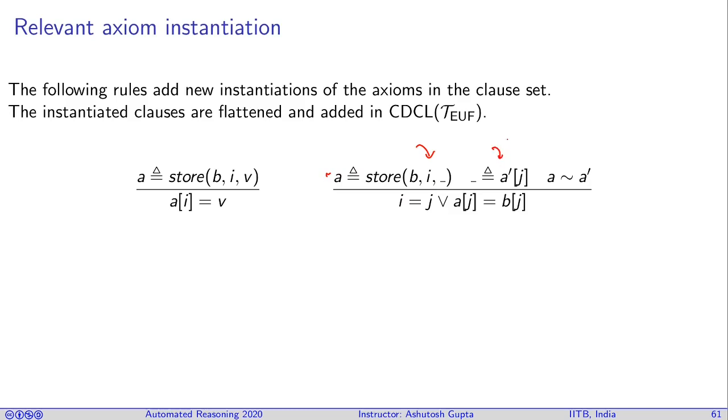Similarly, if you have a situation that you are writing a position i and somewhere another array is being read, which is equivalent. You have shown to be equivalent with a and a1. Then you must go and try to instantiate from the position j, where you say that either i is equal to j, or these two are the same at position j. This is the second array instantiation of the second axiom. Note that this equivalence is the equivalence learned by applying the theory of equality on the terms added by the congruence system.